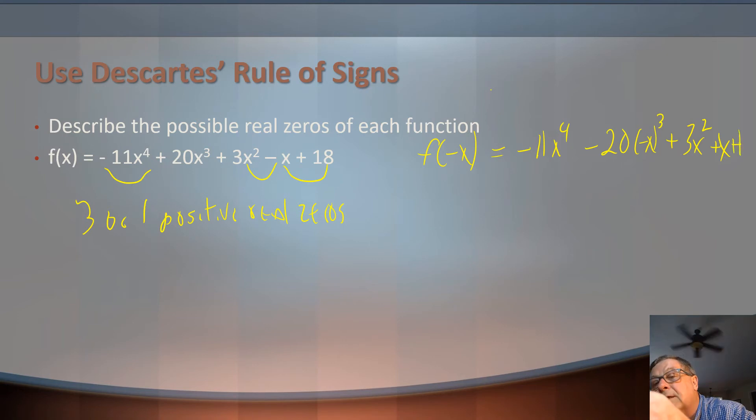But the negative x to the 1st is going to change. And of course, the constant is going to stay the same. How many sign changes do we have here? We'll go negative to negative. Here we've got negative to positive, but then everything else is positive. So we can have one negative real zero.